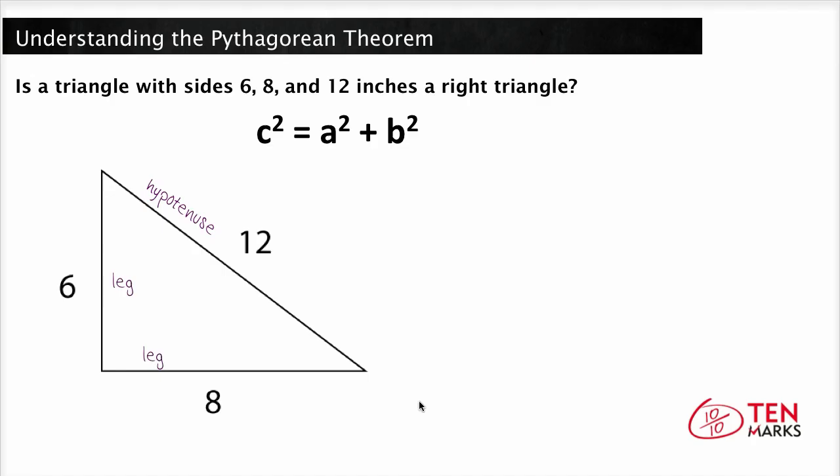Now let's try another problem. Is a triangle with the sides 6, 8, and 12 inches a right triangle? So again, our longest side is 12 inches, so if this is indeed a right triangle, 12 would be the hypotenuse, c, and the legs, 6 and 8, would fill in the values for a and b.